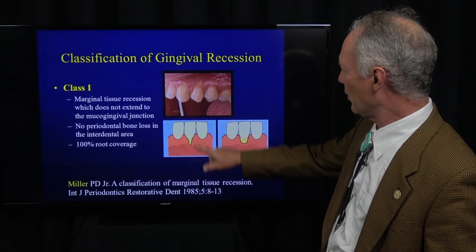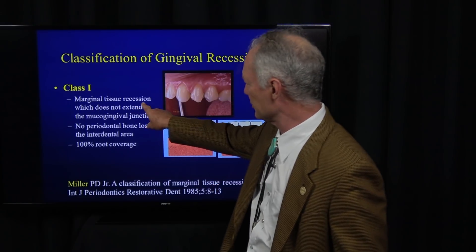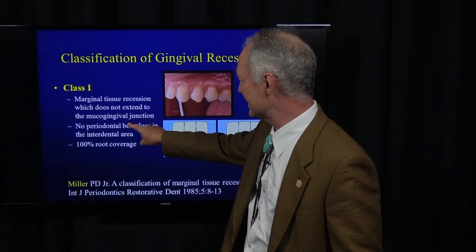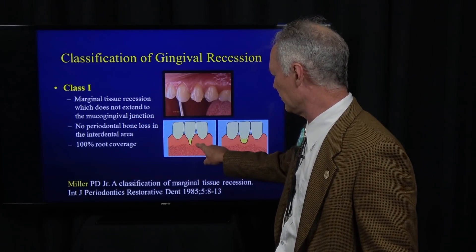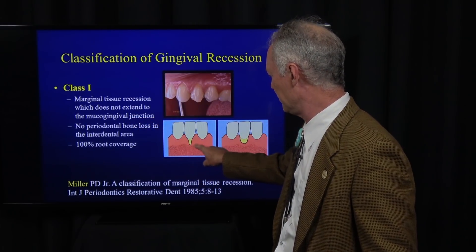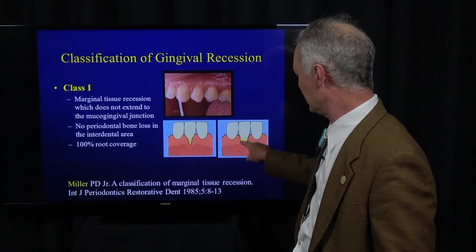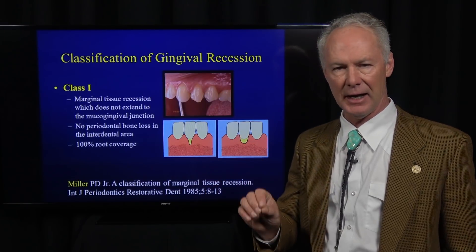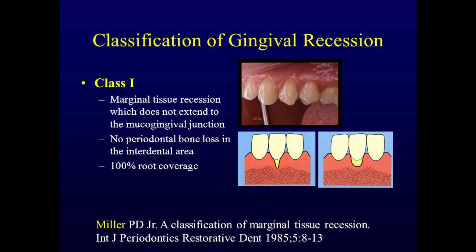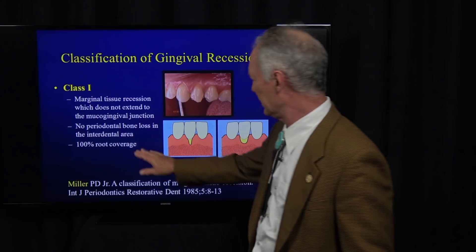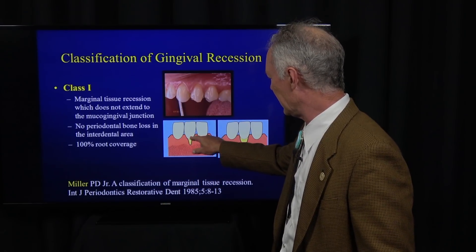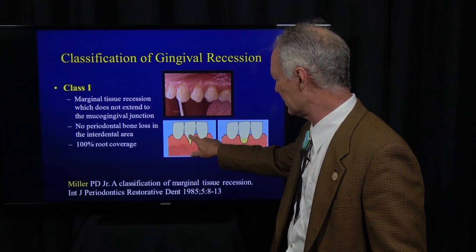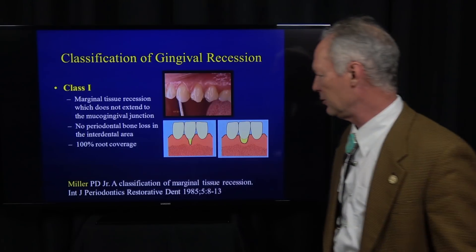Class 1 is when the marginal tissue recession does not extend to the mucogingival junction. Here's the mucogingival junction — the recession is still in the attached gingiva. There's no periodontal bone loss in the interdental area, meaning the bone levels are normal. In this case, you would expect 100% root coverage.